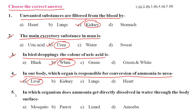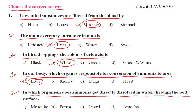The answer to the conversion of ammonia to urea is the liver. Fifth question: in which organism does ammonia get directly dissolved in water through the body surface? The answer is Amoeba. Remember this point.